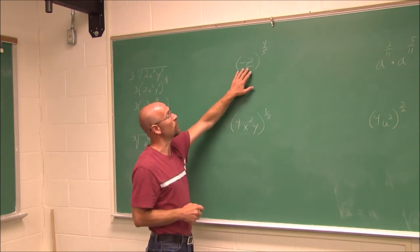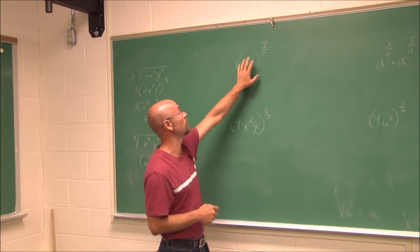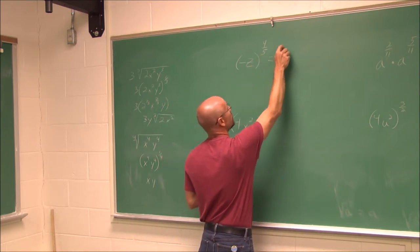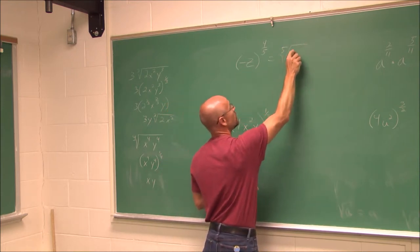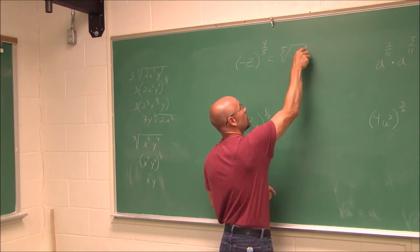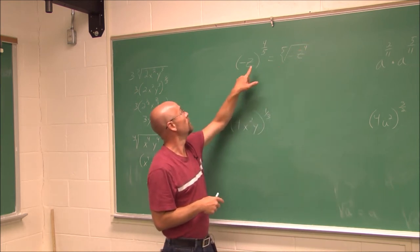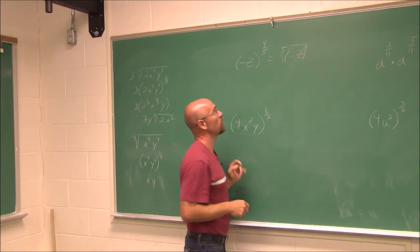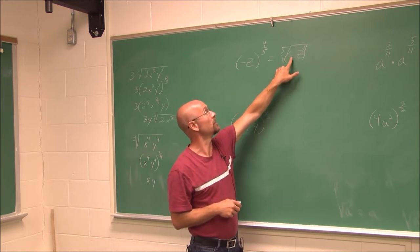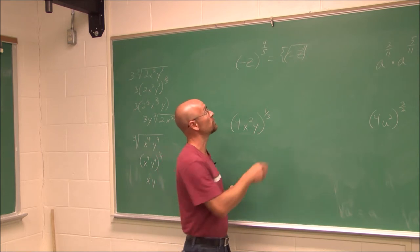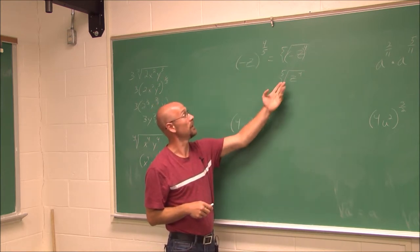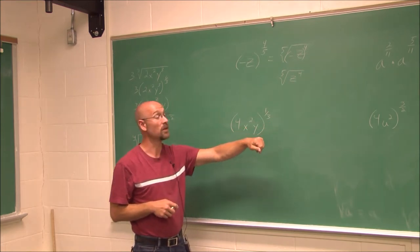For negative z raised to the 4/5, I can write it as a radical with index 5: the 5th root of (negative z) to the 4th power. I should put parentheses around that because I'm distributing the power of 4 to that negative. A negative to an even power is positive, so we can simplify it to the 5th root of z to the 4th. We were able to get rid of the negative. Not much more we can do, so we'll leave it like that.